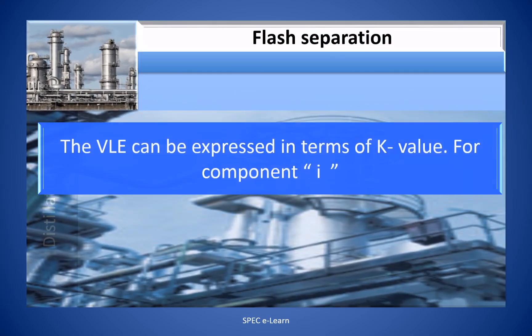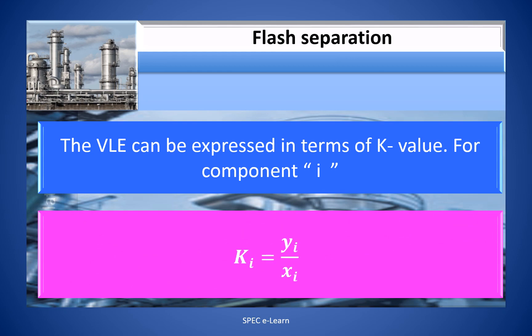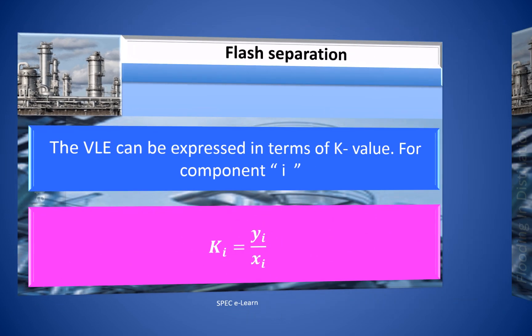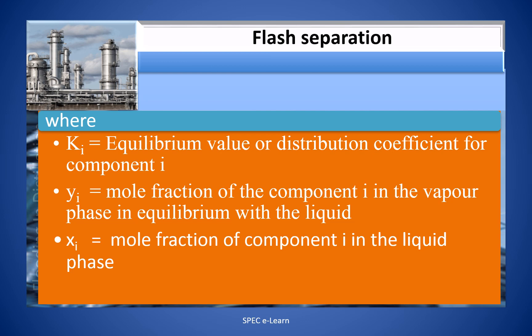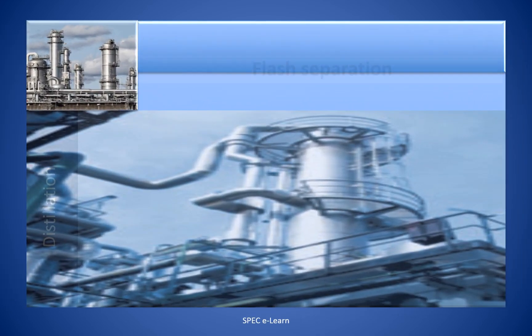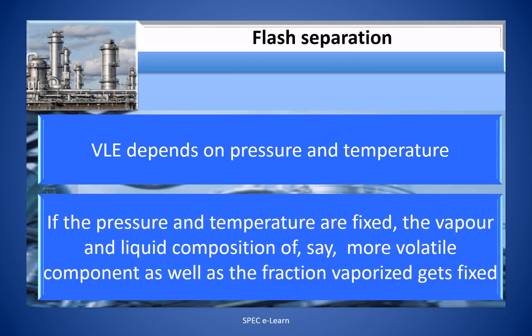The vapor-liquid equilibrium (VLE) can be expressed in terms of K value. For component i, Ki = Yi / Xi, where Ki is the equilibrium value or distribution coefficient for component i, and Y is the mole fraction of component i in the vapor phase in equilibrium with the liquid. VLE depends on pressure and temperature. If the pressure and temperature are fixed, the vapor and liquid composition of the more volatile components, as well as the fraction vaporized, are fixed.